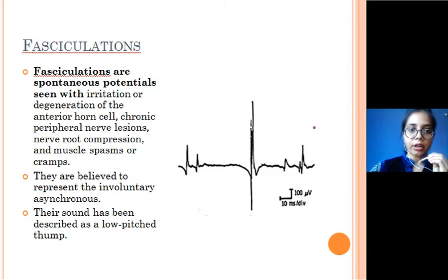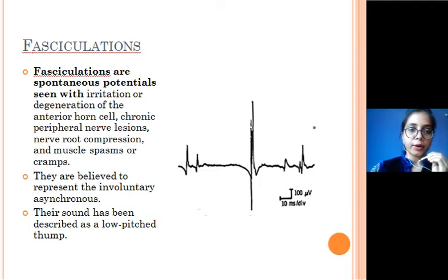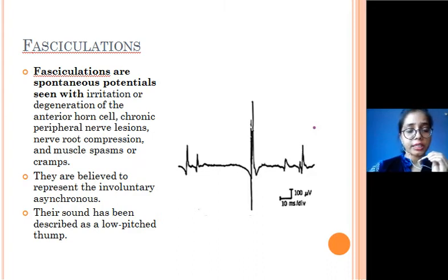The next type is fasciculation potentials. They can occur due to irritation or degeneration of anterior horn cells, and sometimes they are also seen under normal conditions. They are believed to be involuntary and asynchronous, and the sound is a low-pitched thump. You may sometimes feel them as continuous movement of the eyelids or as cramping in the calf due to fatigue — they can occur under normal circumstances.